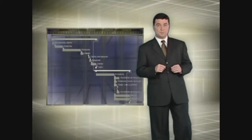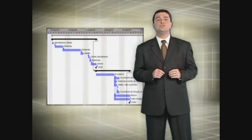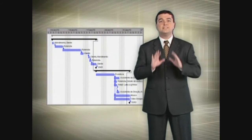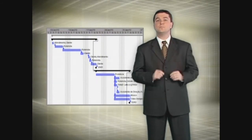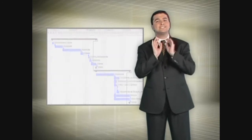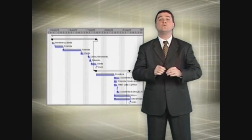Following up a project means carrying out the control process to ensure that the plan is being executed as foreseen. To do this, actual work that has been inserted should be compared to the baseline of the project. The baseline is a set of the plan's data that will serve as a parameter for comparison with the execution of the project. It is just like an exact photo of how the plan should be executed.